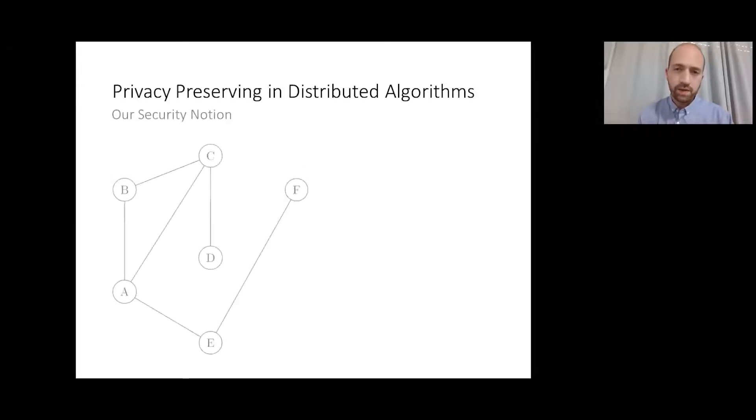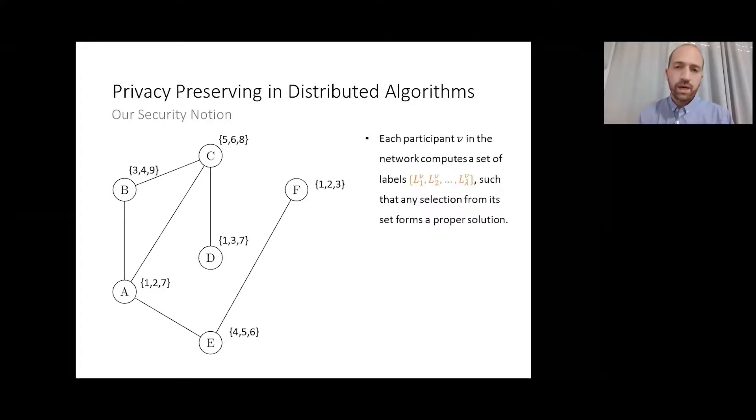Our methodology is to let the nodes find a set of valid labels, such that each label they might choose from the set will lead to a valid solution. As an example, in the graph on the left, each node picks three numbers such that none of them was picked by any of its neighbors. Then each node selects arbitrarily one label from the set, such that while any node may find out the entire label set of other nodes, they won't be able to infer the exact label that was chosen by the node.